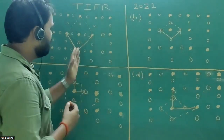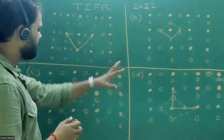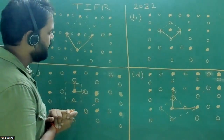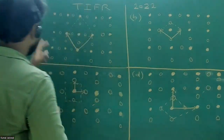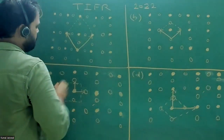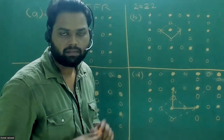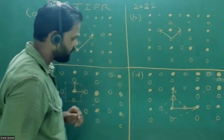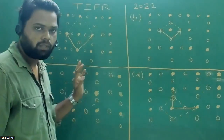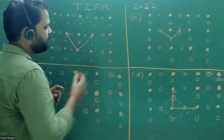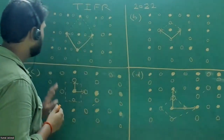In this question, four diagrams were given as the four options. It was stated that these four are two-dimensional unit cells. It was also said that the vectors shown in each diagram are the primitive lattice vectors. The question asks: which of the following four options is a primitive unit cell?